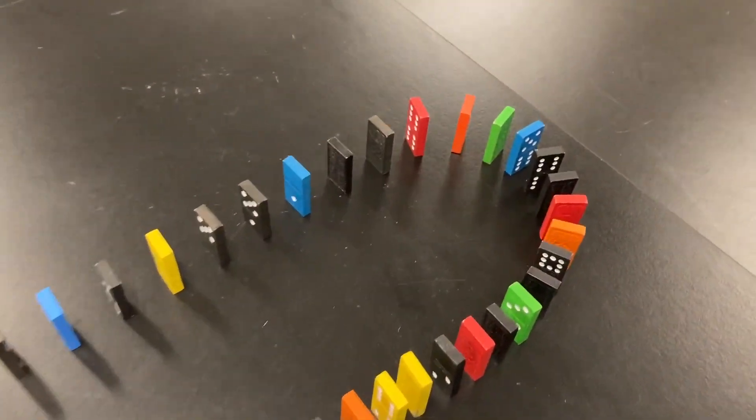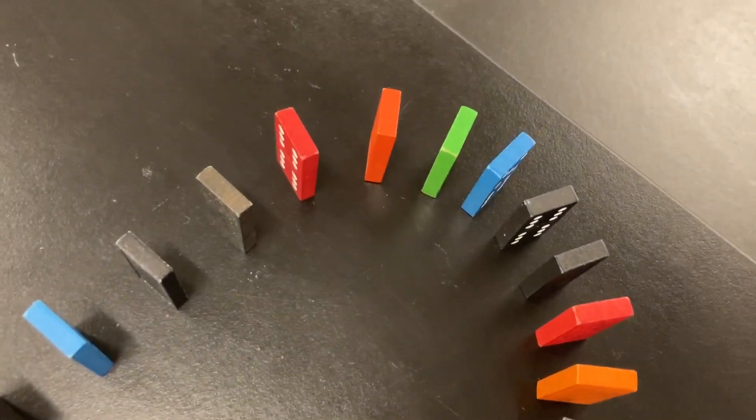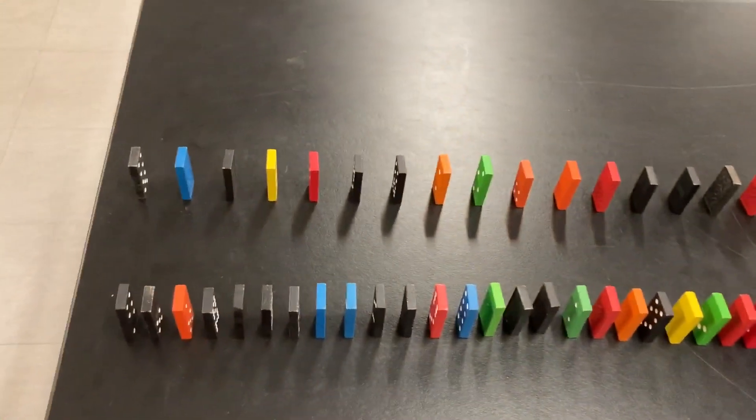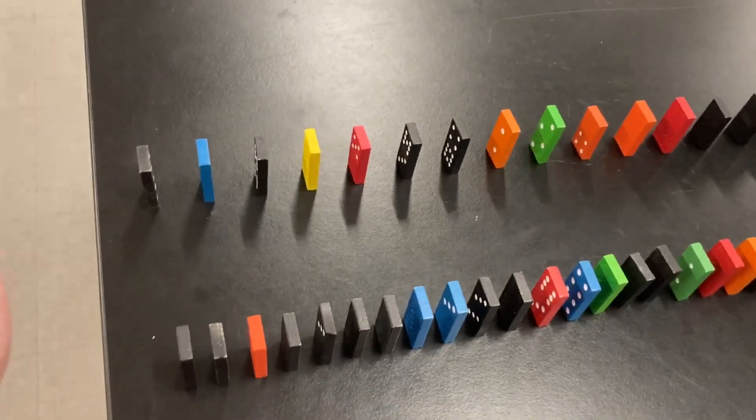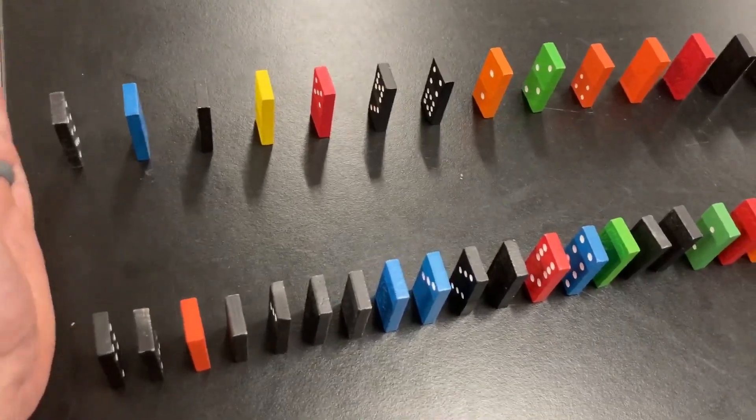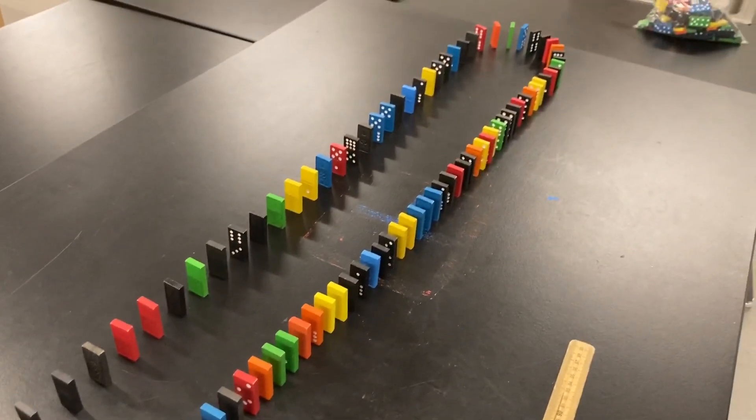So the middle is this blue domino, so whichever row knocks the blue domino over, that's going to be our fastest path. Go ahead and make your prediction. What do you think is going to happen?